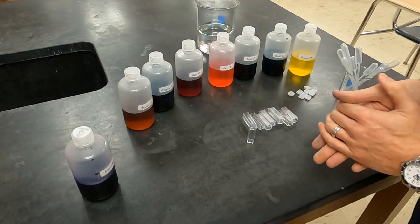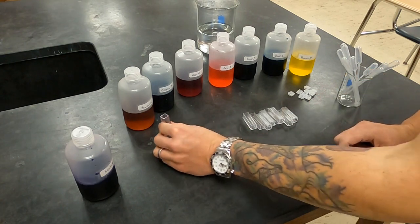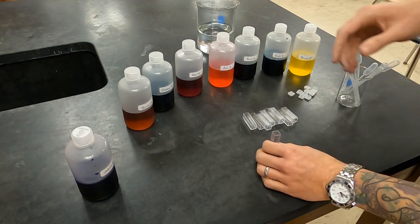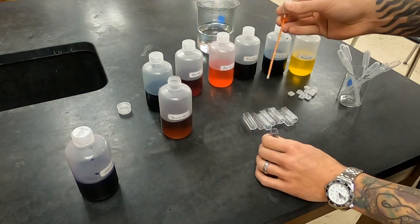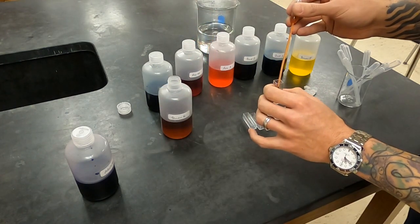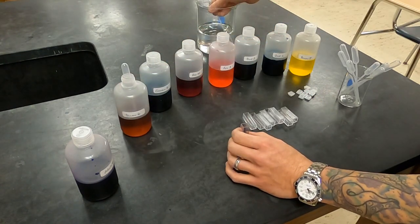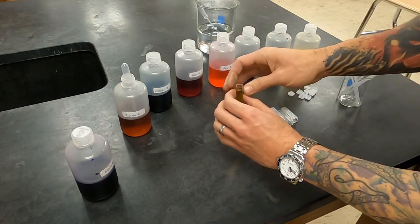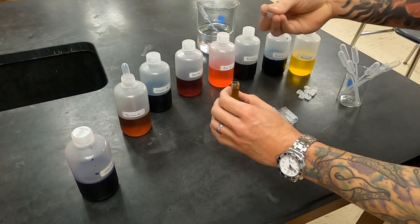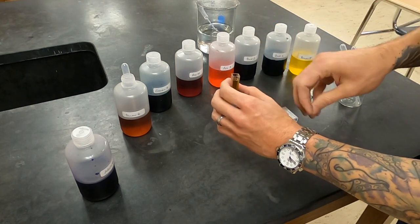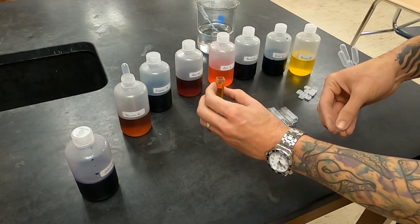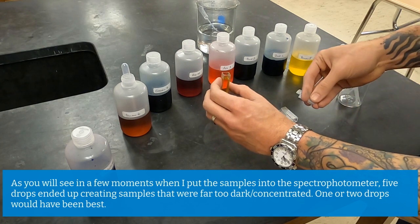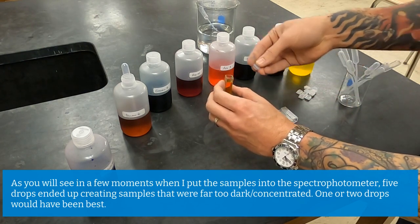It's important to keep track of which cuvette is which, so as I prepare them I'm going to set them in front of the sample. Now you don't want to fill them completely to the top or you'll make a mess when you put the cap on. Notice I put in five drops for the yellow six and I'm going to try to be consistent with that five drops for all the remainders.